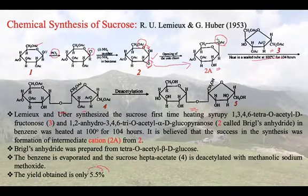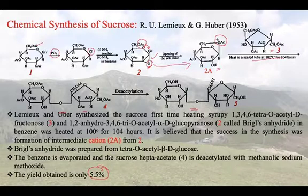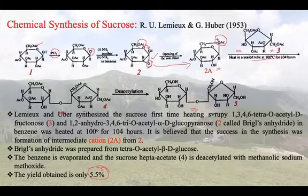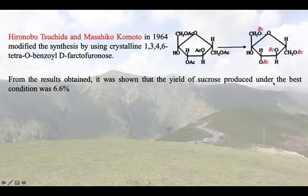That was a very low yield, but it was the first group to synthesize sucrose, and at that time it was considered a success. Later, a new group made a slight modification by changing the 1,3,4,6-tetra-O-acetyl-D-fructofuranose, because this material was syrupy — not pure. It was believed the syrupy material contained impurities that lowered the final yield. So they replaced the syrupy material with a pure crystalline substance.